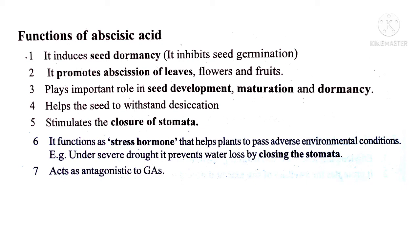ABA stimulates the closure of stomata and functions as a stress hormone that helps plants to pass through adverse environmental conditions. Under severe drought, it prevents water loss by closing the stomata. It also acts antagonistically to GAs (gibberellic acids).